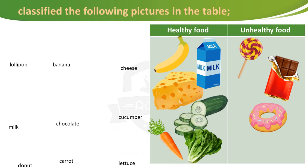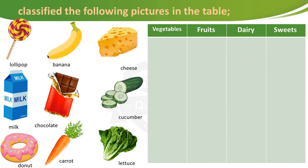As you see, there is healthy food and unhealthy food. Unhealthy food like lollipop, chocolate, and donut, because each one has lots of sugar. But healthy food like banana, milk, cheese, cucumber, carrot, and lettuce.